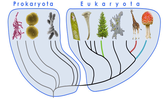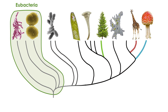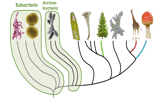Prokaryotes are simple organisms without a nucleus and without organelles. Eukaryotes, on the other hand, do have a nucleus and their cells also have organelles — for example, mitochondria. In one popular classification scheme, these two super kingdoms are divided into six kingdoms. Prokaryotes are divided into two: the kingdom Eubacteria and the kingdom Archibacteria.